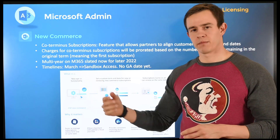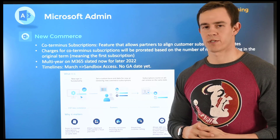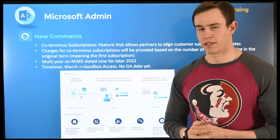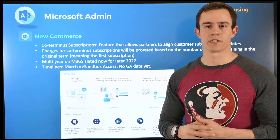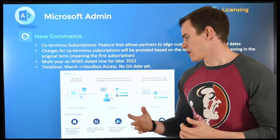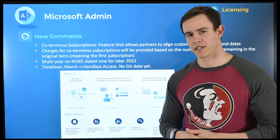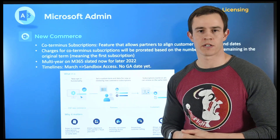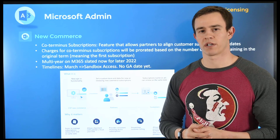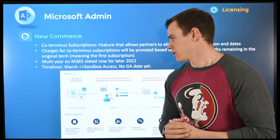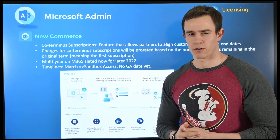The other NewCommerce announcement is that multi-year agreements — like three-year commitments for M365 products — are delayed until later in 2022. If you were talking to customers about those contracts, it may be best to delay those conversations and get them into one-year or monthly plans for now. As for the coterminous policy, it's being introduced into a sandbox in March, allowing partners and CSP partners to start testing it. There's no official GA date yet, and rollout will be on a per-distributor basis.